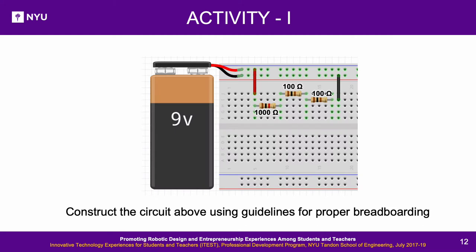Activity 1: Construct the circuit shown using guidelines for proper breadboarding. The color code on a resistor can help determine the value of its resistance — calculating resistance from color code will be explained later. For this activity, the objective is just to get familiar with making circuits on a breadboard, so use the resistor with the color code shown in the circuit schematic. Pause the video to do this activity and hit play when done.